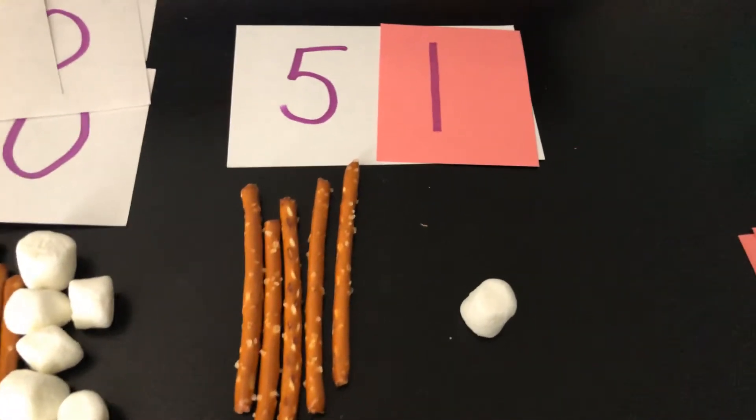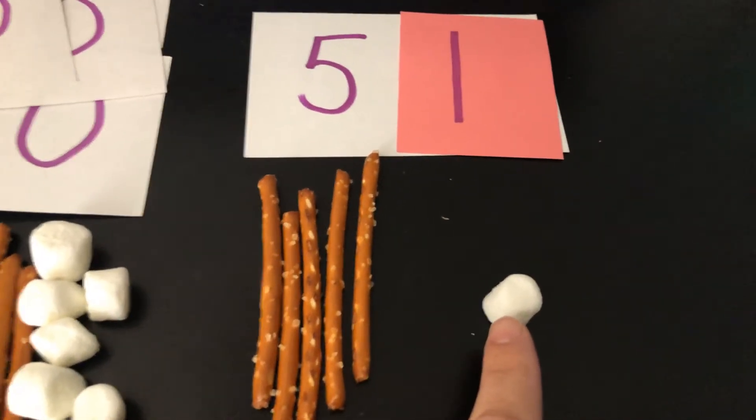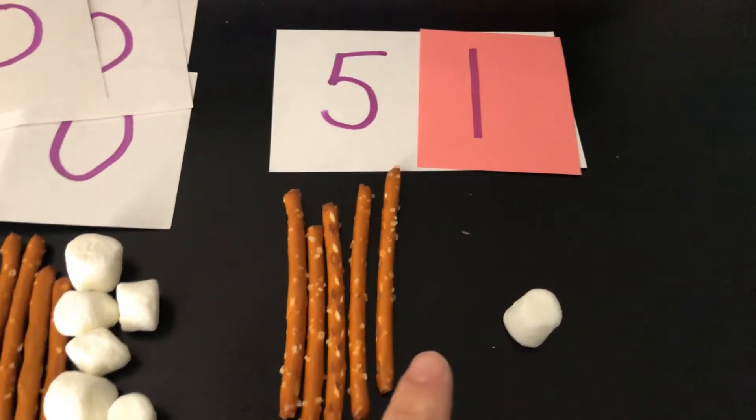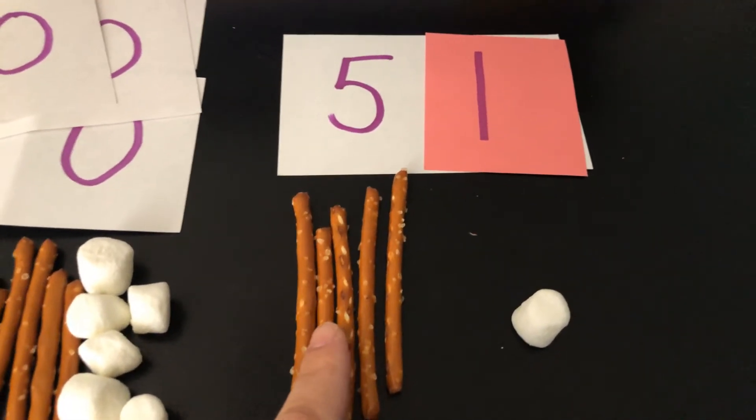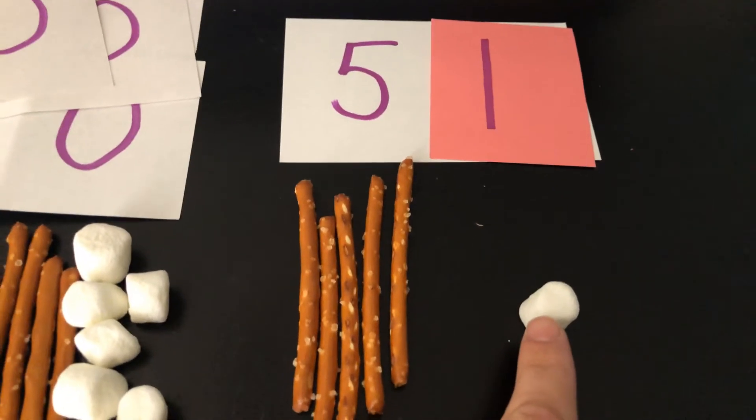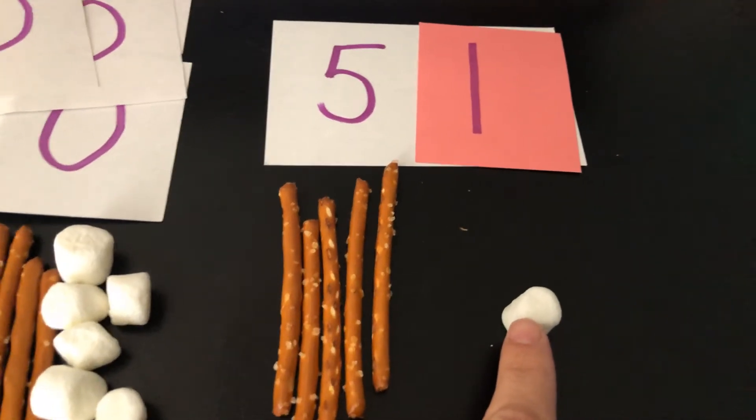So, I decided to use a marshmallow. You could also use chocolate chips for ones. You could use M&Ms. If you want to be healthy, you could take carrot sticks and use those for tens. And for your ones, you could use things like green peas, little pieces of broccoli.